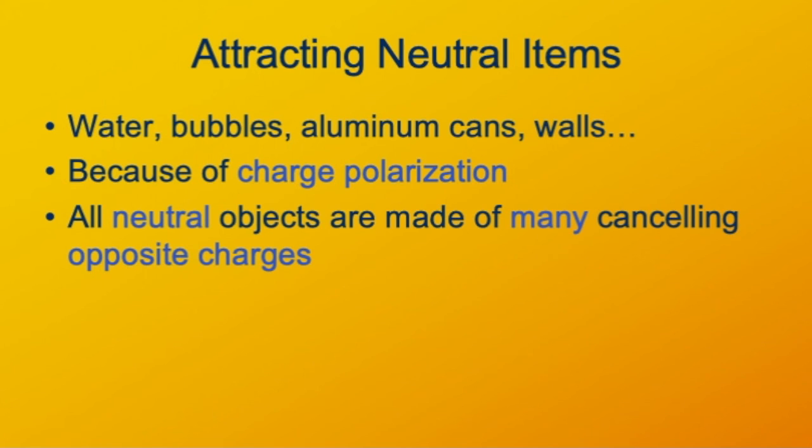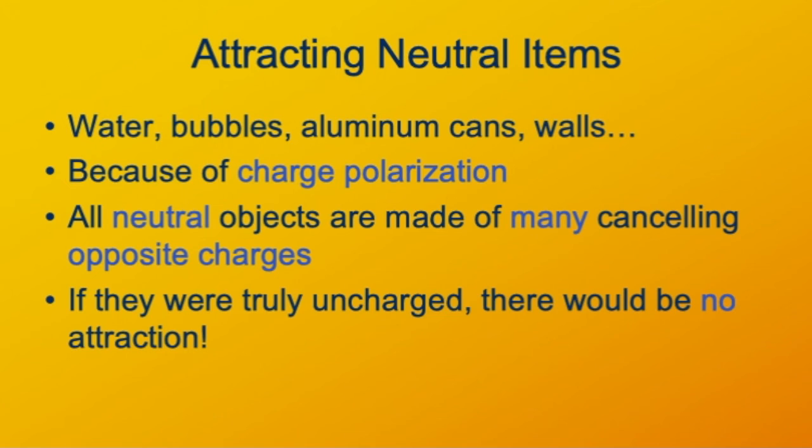This tells us something very interesting about matter in general, and that's that neutral objects are neutral. They're not uncharged. They're made up of canceling amounts of negative and positive charges, which add up to zero. But the charge is still there. And when you bring an electric charge up against a neutral object, it reveals the electrical nature of the neutral object. If the neutral objects were truly uncharged, then there would be no interaction at all.